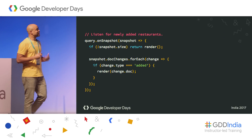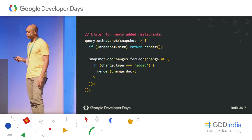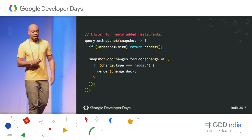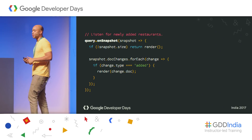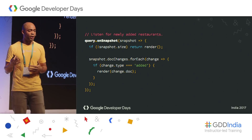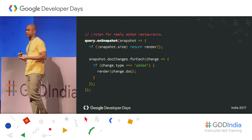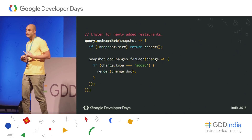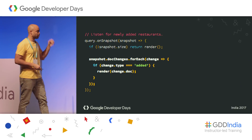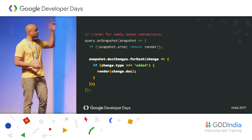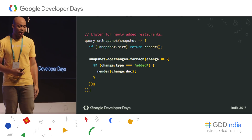To listen for updates to our collection of restaurants, we call onSnapshot on our query. Once we have onSnapshot on the query, we can get updates. Those updates can be of three types: a change update, a delete update, or an added update. In this case we're looking for the added update — once we know it's an added update, we call render, which adds it to our UI.